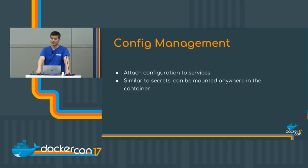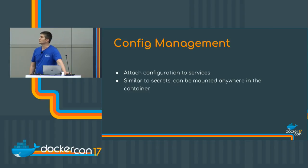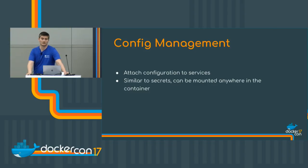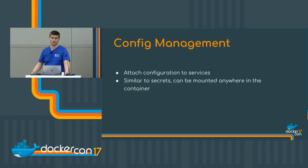We're also working on config management. It's very similar to secrets except that you can attach the configuration to any location in the container. The use case is: today when you want an NGINX with a custom configuration, the only way is to build a custom image — you do FROM nginx, attach static configuration, build, push, and so on. With config management, you can just create a config object, run a vanilla NGINX, and say I want to map this NGINX config to /etc/nginx — and it will do that for you. We provide the same guarantees as secrets: rolling updates, automatic rollback, health checks, and so on.